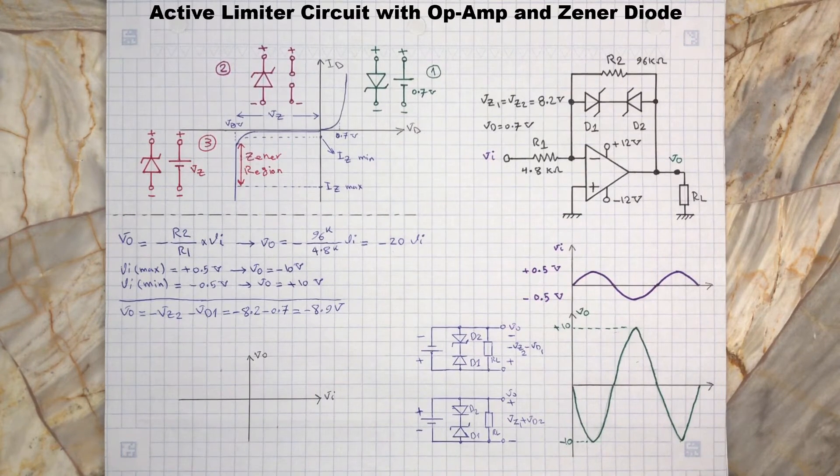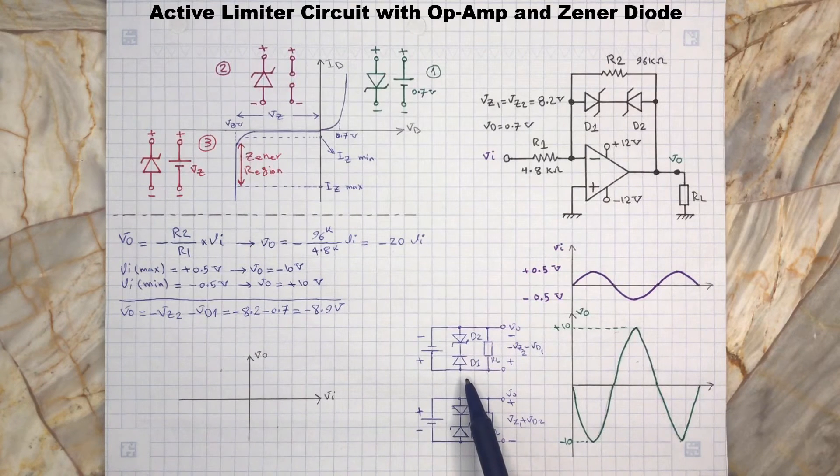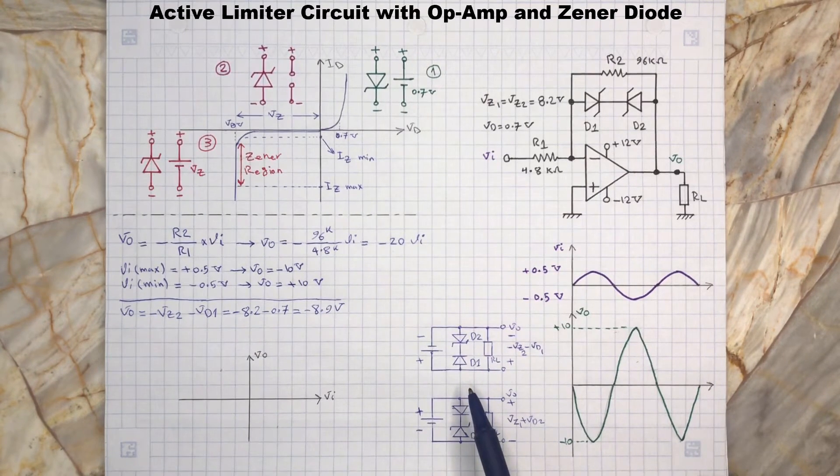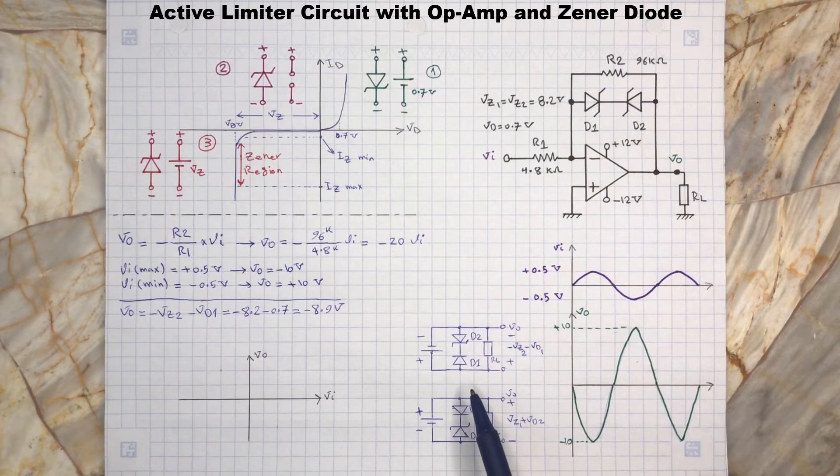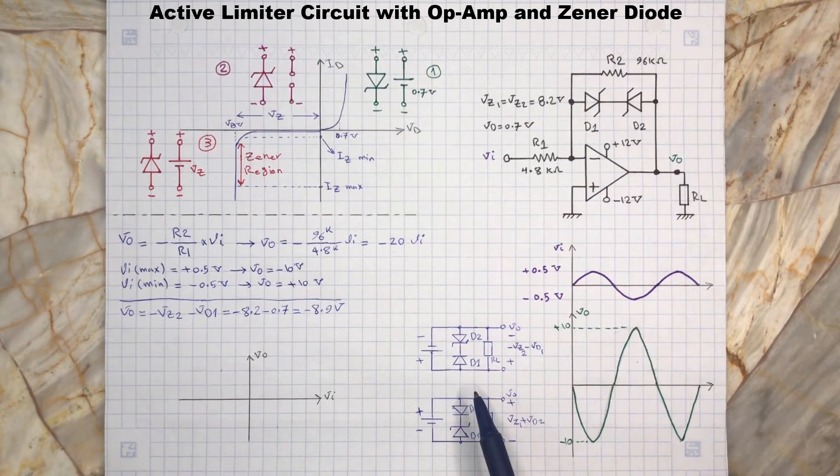As you may notice, the diode D1 will act as a regular diode and its anode terminal gets forward biased from the op-amp inverting terminal, which is a virtual ground. Therefore, as long as D2 stays in the breakdown region, it will limit the output voltage at negative 8.9 volts. So we will have...